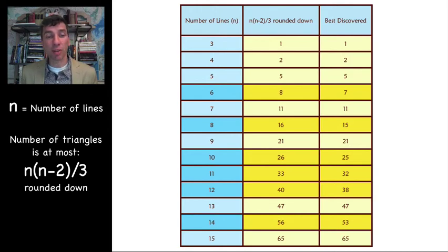But for the other ones, we don't know that. So for ten, eleven, and twelve, we don't know if we can do better than, for example, for ten, if the twenty-five solution can be improved to twenty-six. We don't know that.